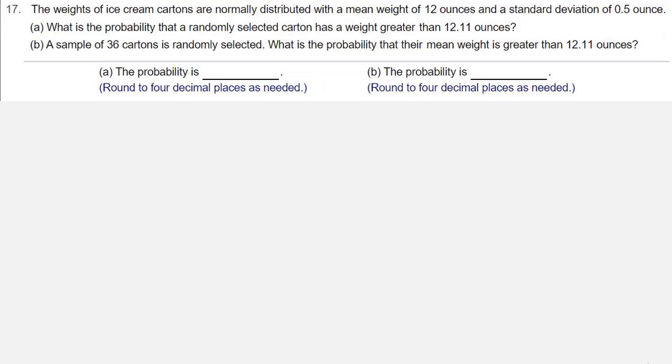Let's start with Part A. In Part A, we're going to find the z-score by doing z equals x minus mu over sigma. The x value is 12.11, mu is 12, and sigma is 0.5. That's 0.11 over 0.5, which is 0.22.